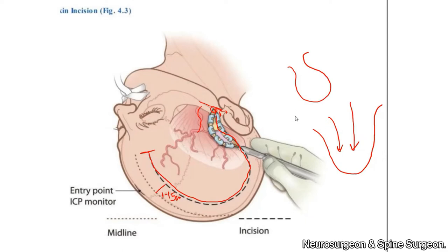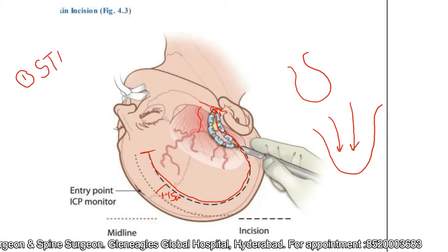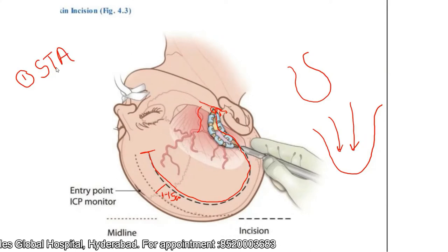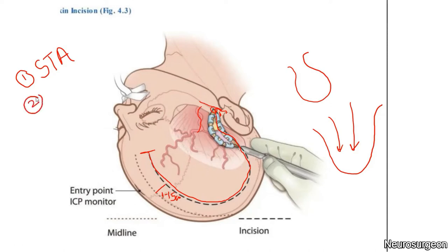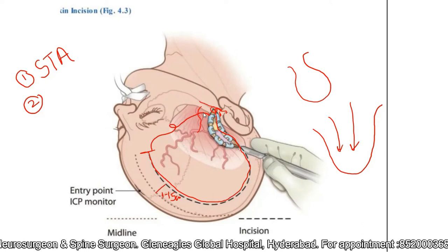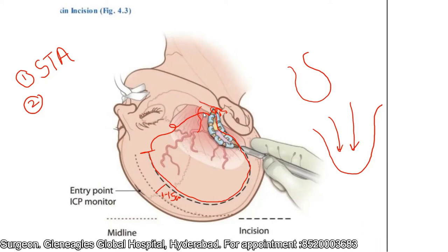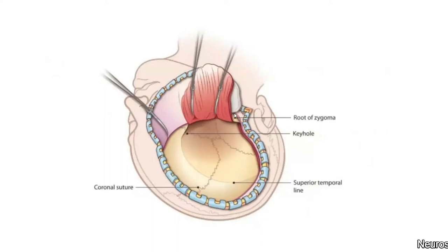To ensure the vascularity of the flap, we take two or three precautions. One, we try to preserve the superficial temporal artery, achieved by palpating it in front of the tragus. Second, we ensure that the base of the flap is as wide as possible. Once the incision is developed, hemostasis is achieved.